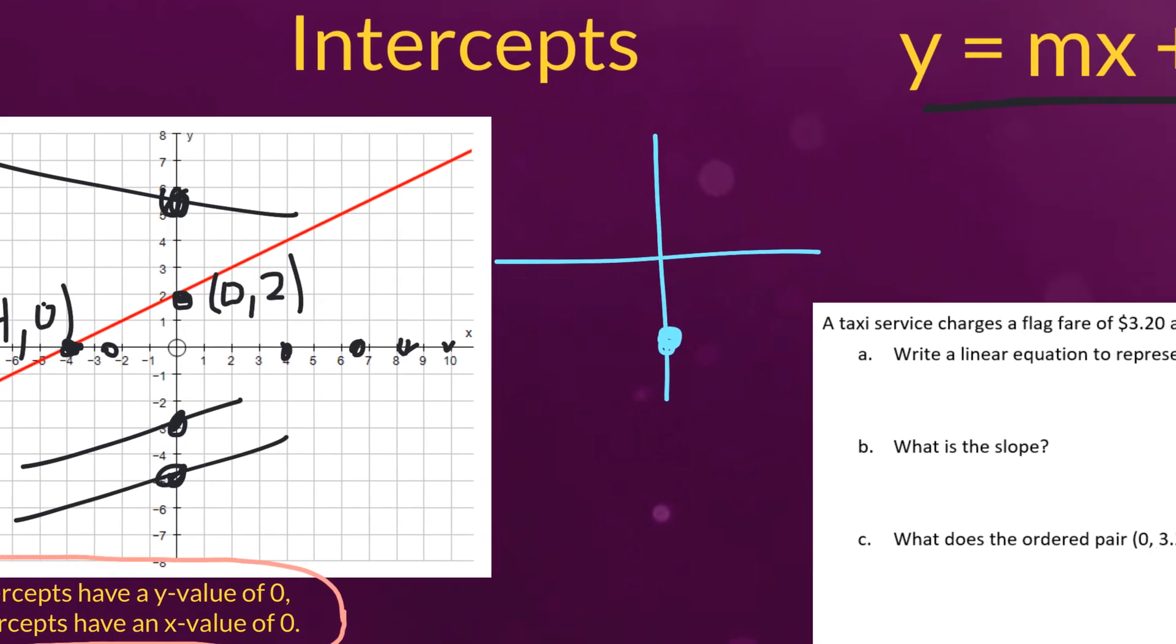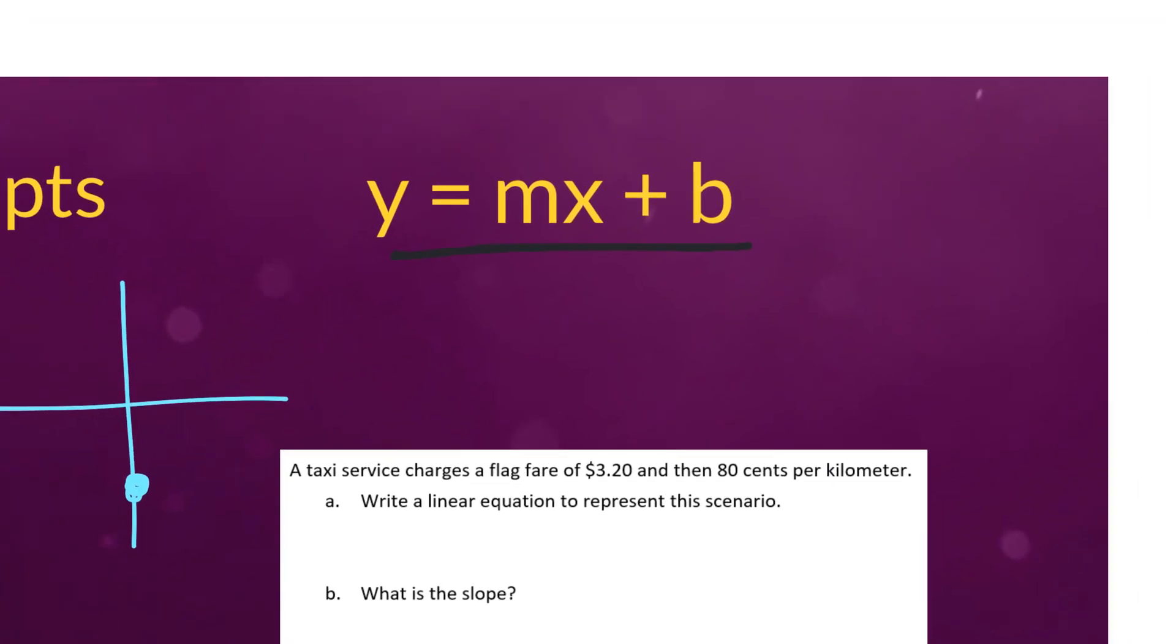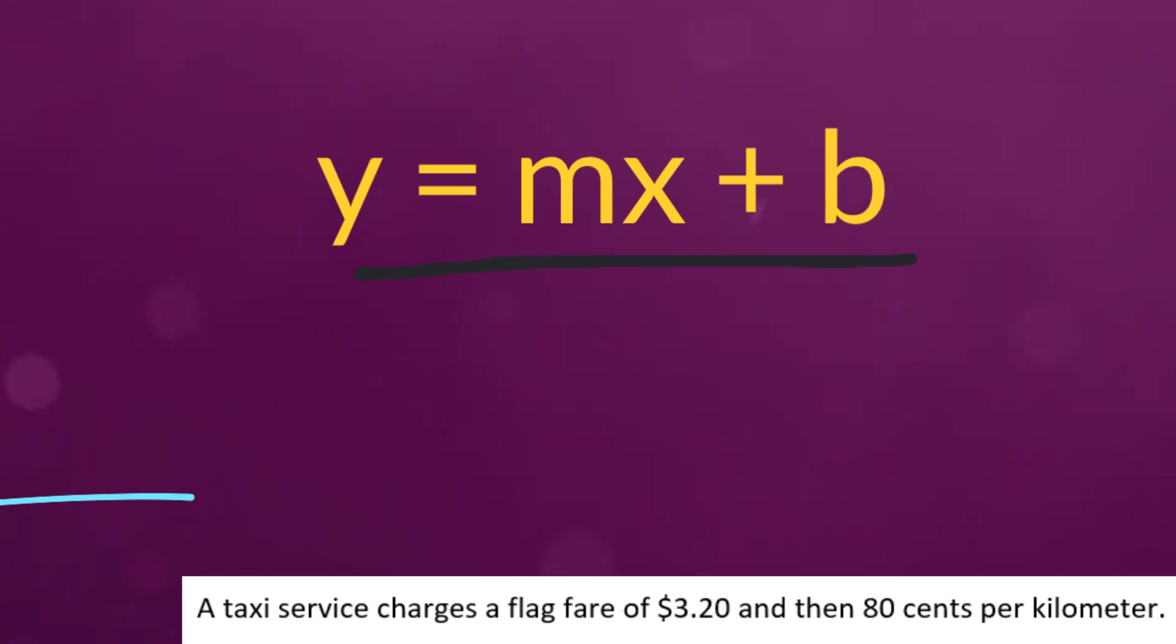Now the next thing we're going to talk about is when we're given an equation in this form, y equals mx plus b. So far we've learned about the slope of a line and we learned that the slope is represented by the letter m of the alphabet.